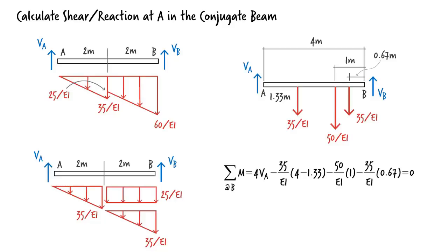Solving this equation for VA, we get... This means the slope of the real beam at A is 41.7 over EI. The positive sign means the beam rotates counterclockwise at A.